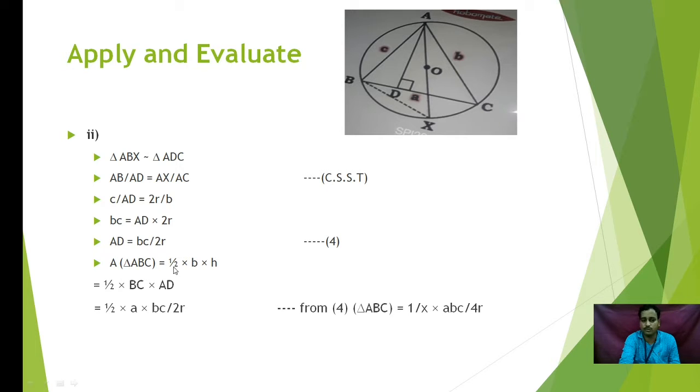Therefore, area of triangle ABC, we all know, it is half of base into height. Base is BC and height is AD. We have got the values for BC and AD. Let us substitute the value of BC as A and AD as BC upon 2R. Now, this 2 into 2, 4 will be there in the denominator. One-half, 2 will get cancelled. So, we are left with ABC upon 4R, which we are supposed to prove. Thank you for listening to me.